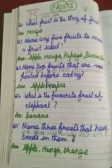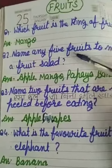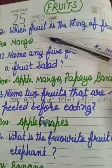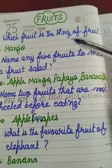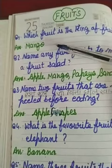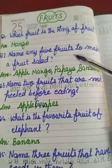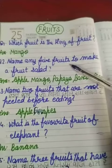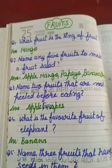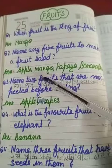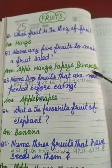First question: which fruit is the king of fruits? Mango. Name any five fruits to make a fruit salad. Apple, mango, papaya, banana.